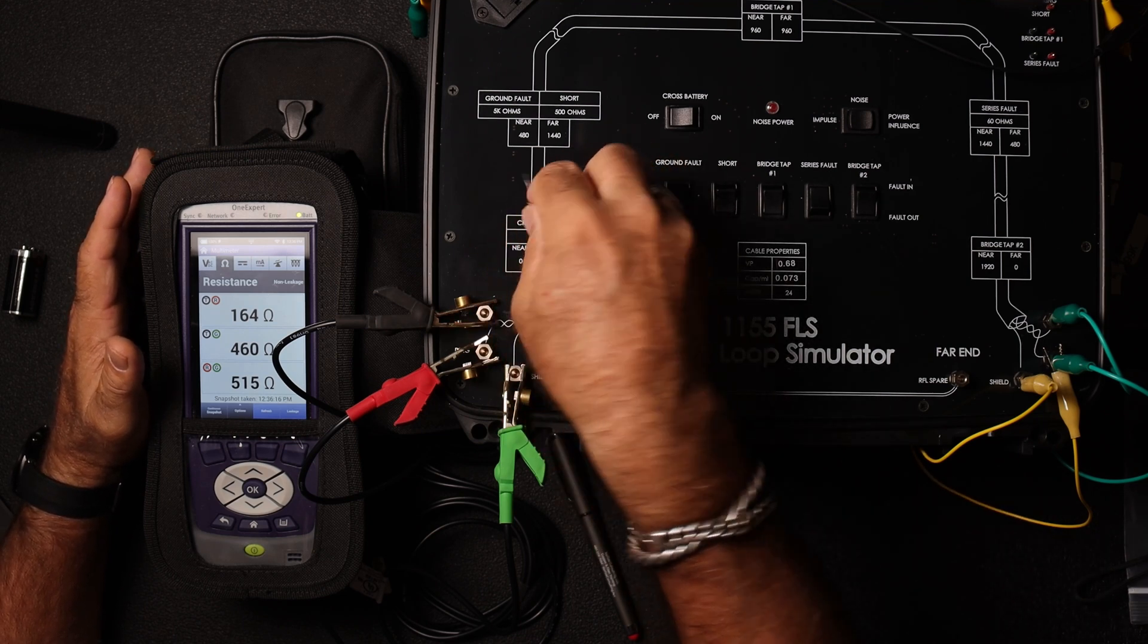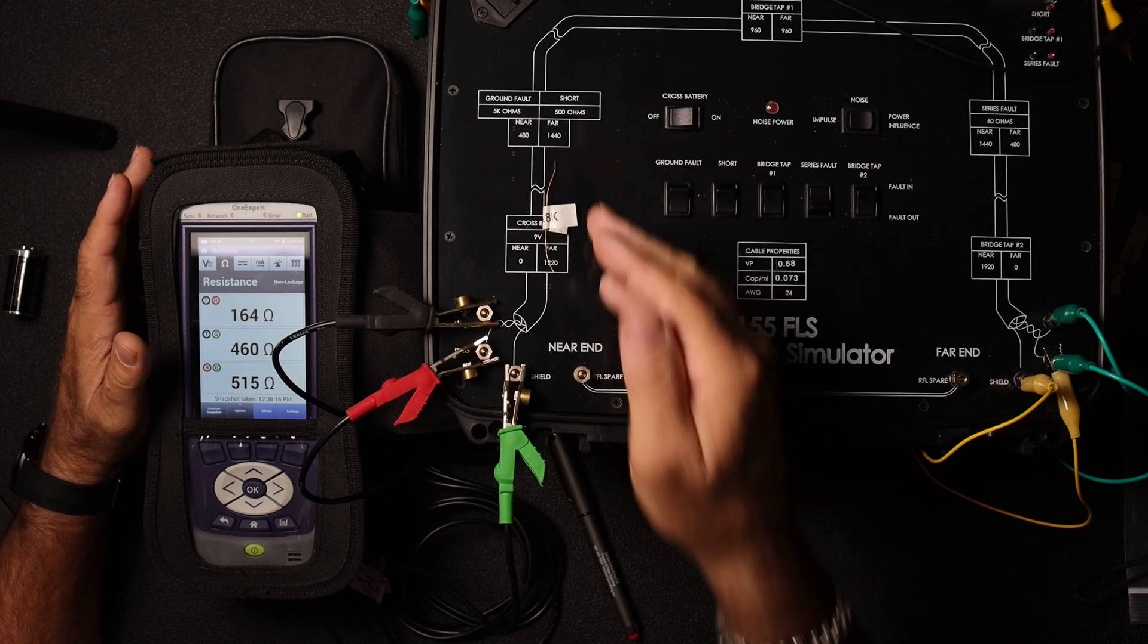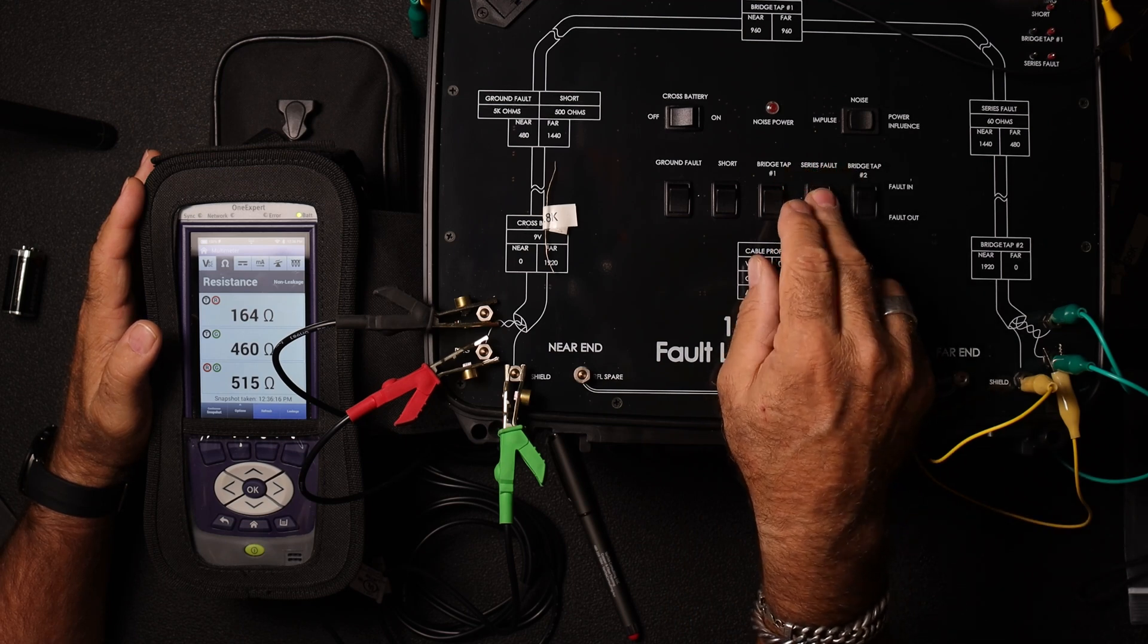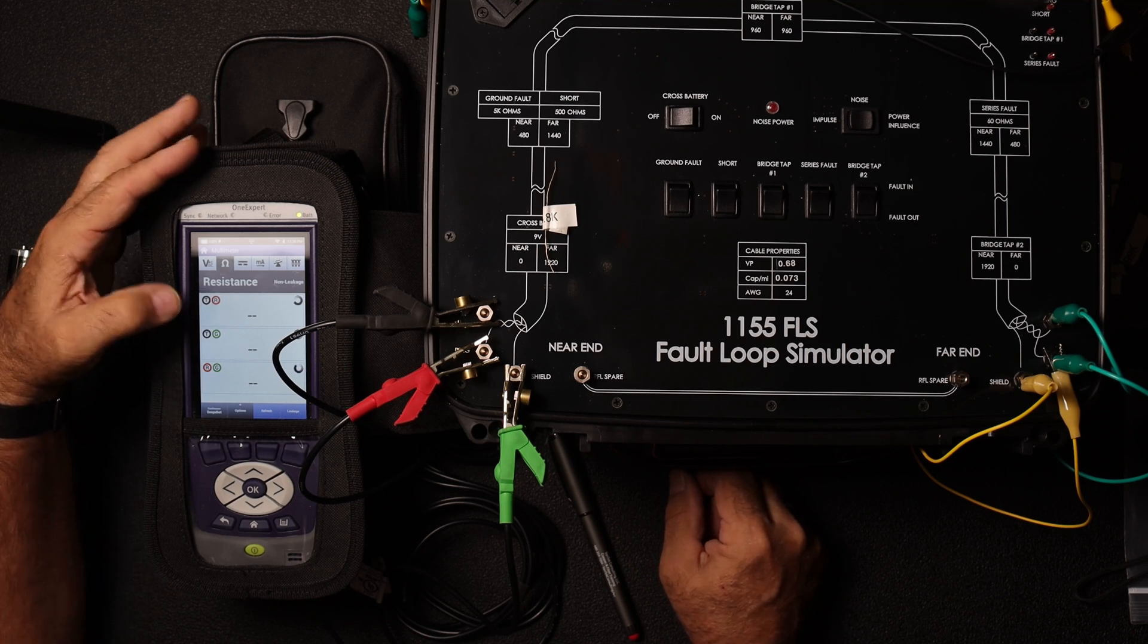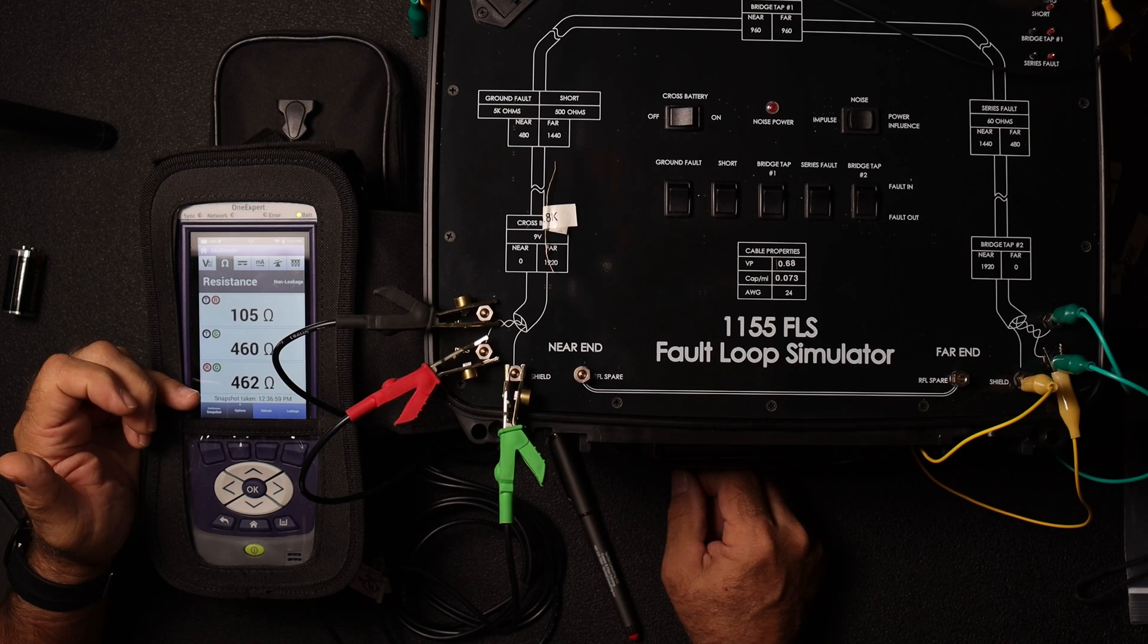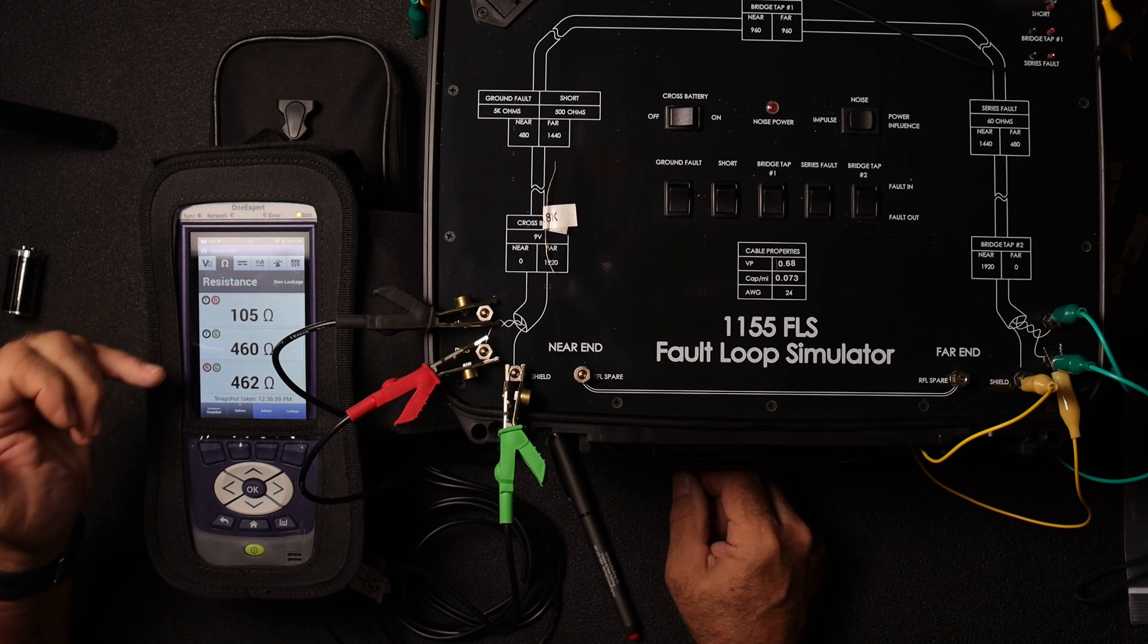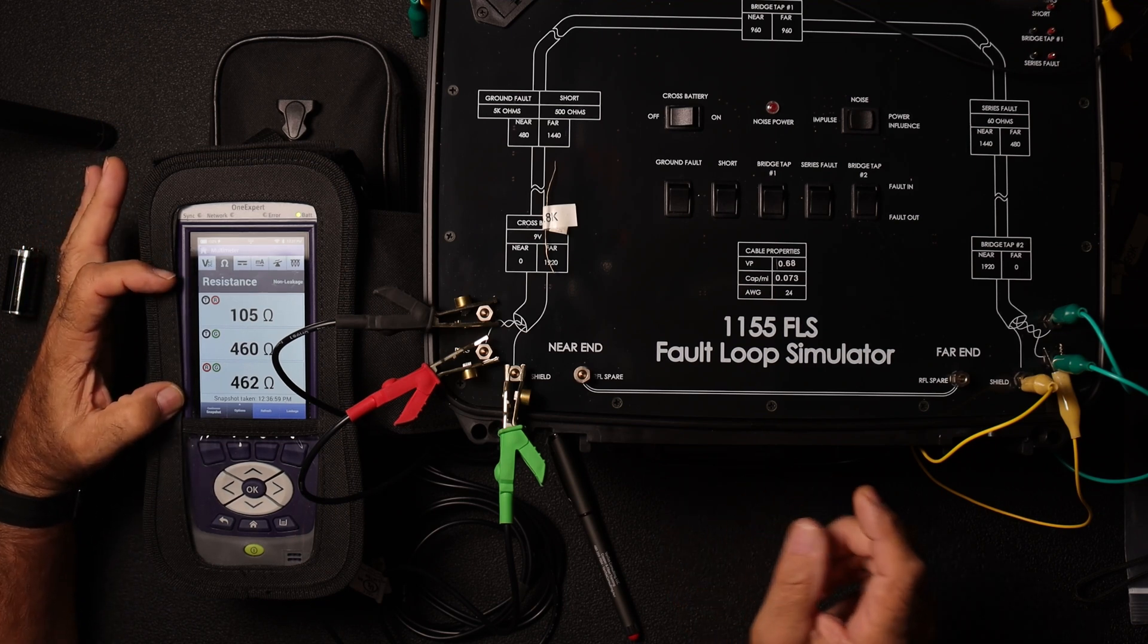So what that says is that on our ring side, we have a resistor that's sitting on that ring side in series. It's sitting this way. So we can't see it when it's open because it's in line with that one conductor. If we take that series fault out of there and then do a refresh, what happens is we've got 105 ohms, 460 and 462. So the rule of thumb on a balanced pair, resistively balanced pairs, it has to be within one percent or five ohms, whichever is less. All right.